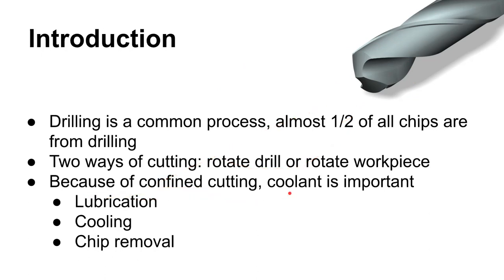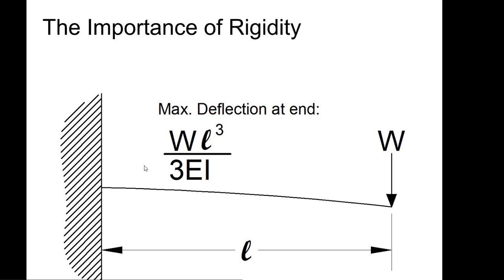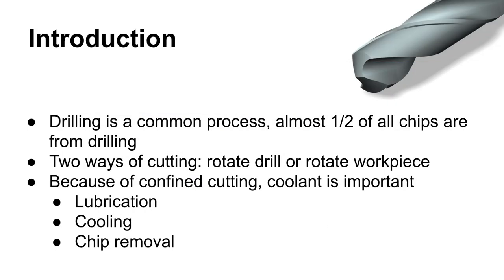Drilling is a little bit problematic because the cutting happens far away from where you're holding the tool — way back at the shank end, while cutting happens at the complete other end. The drill will actually twist and you get deflection. That formula we looked at earlier shows that deflection changes at the third power of the length. This makes drilling an intrinsically unstable process.